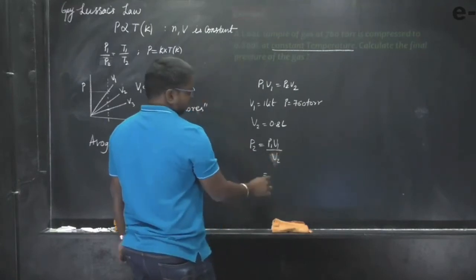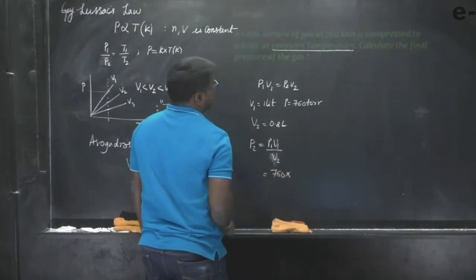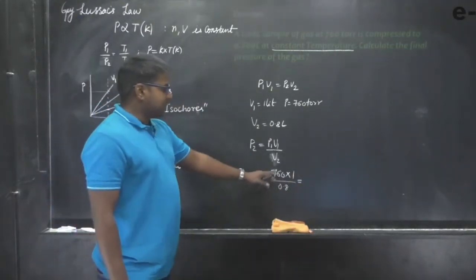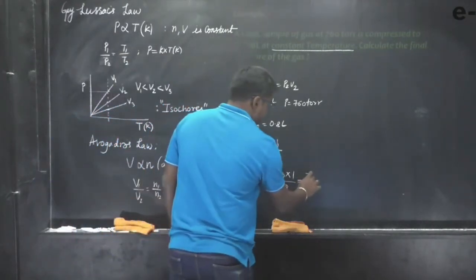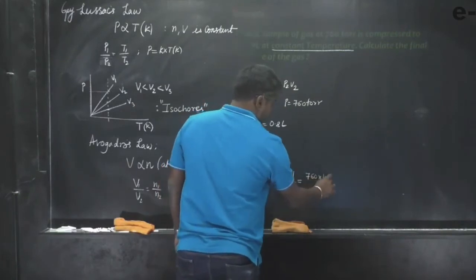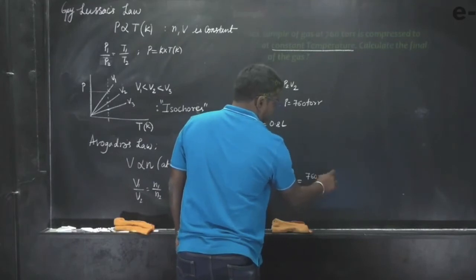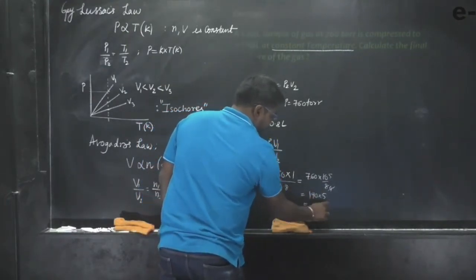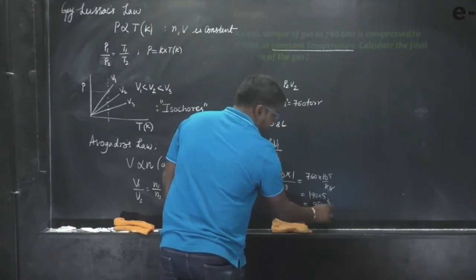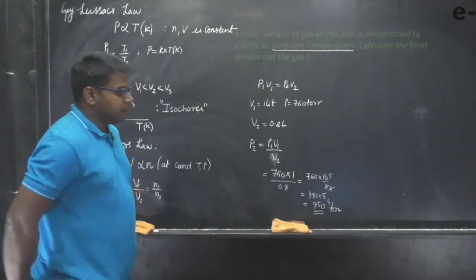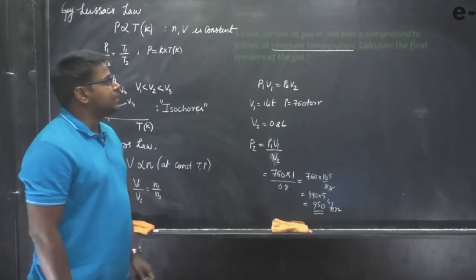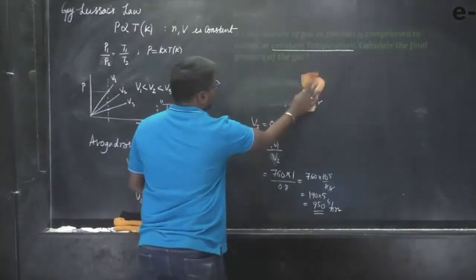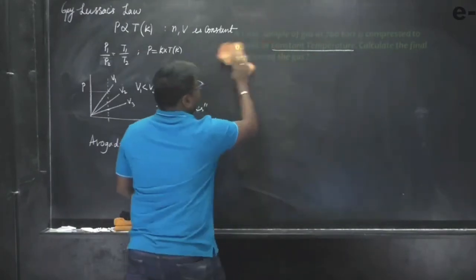Substituting the values: P2 = 760 × 1 / 0.8. This simplifies to 760 × 10/8, or 760 × 5/4. Cancelling gives 190 × 5 = 950 torr, approximately 960 torr. The pressure has increased to around 950–960 torr as the volume decreased to 0.8 liters. That is the simple kind of question you should be able to answer from Boyle's law.